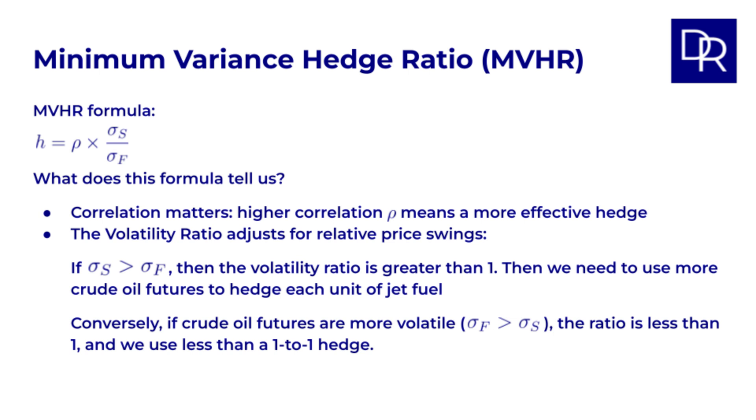Correlation matters. The higher the correlation, rho, the more effective our hedge can be. If jet fuel and crude oil prices are highly correlated, the hedge ratio will be closer to 1. The volatility ratio, sigma s over sigma f, adjusts for relative price swings. If jet fuel prices are more volatile than crude oil futures, sigma s greater than sigma f, then the ratio is greater than 1. Then we need to use more crude oil futures to hedge each unit of jet fuel, because jet fuel prices are swinging around more.